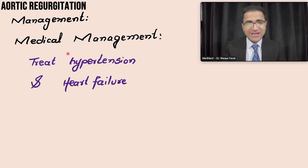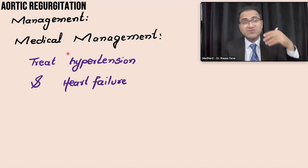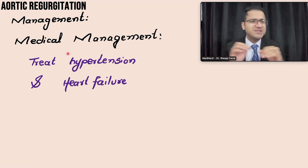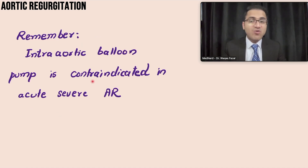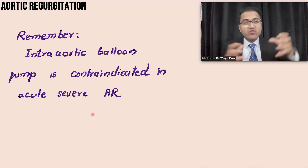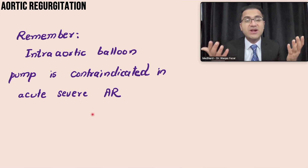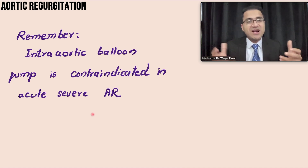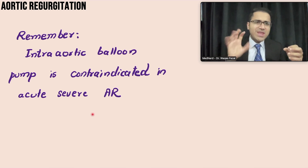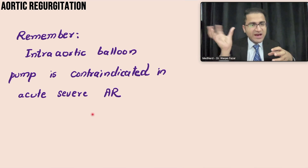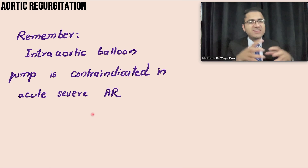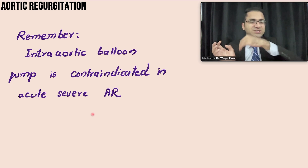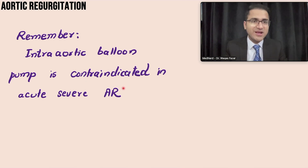For medical management, these patients likely have heart failure and hypertension that need to be managed. Importantly, intra-aortic balloon pump is contraindicated in acute severe aortic regurgitation. The intra-aortic balloon pump is placed in the aorta to assist blood pumping when the heart cannot do so adequately. However, in the presence of a regurgitant aortic valve, the pressure it generates would worsen aortic regurgitation and further damage the heart. Therefore, intra-aortic balloon pump is contraindicated.